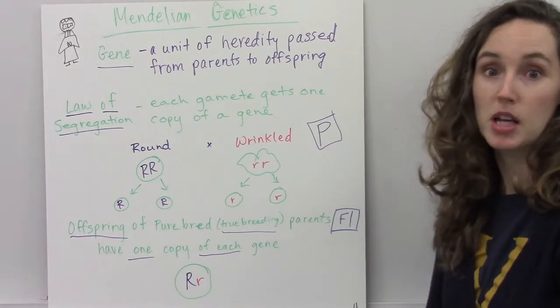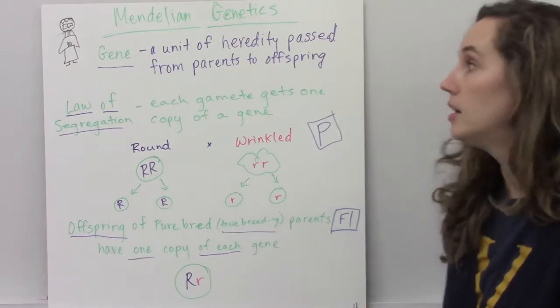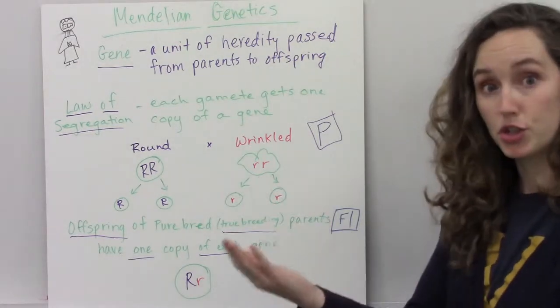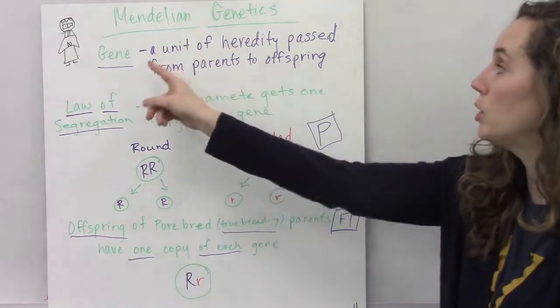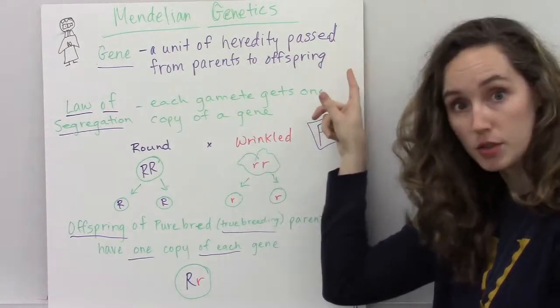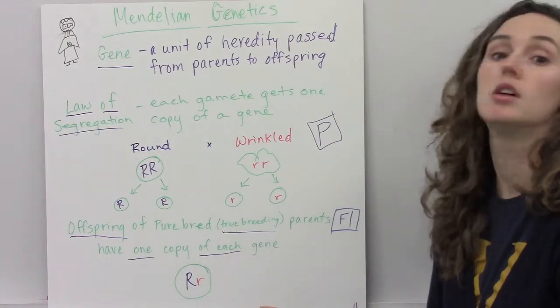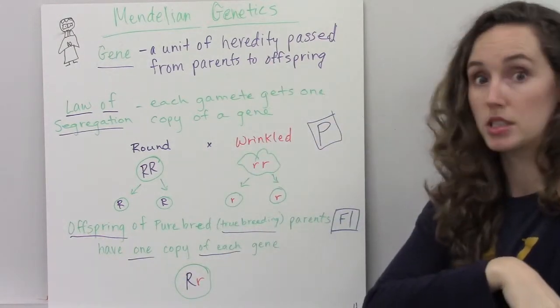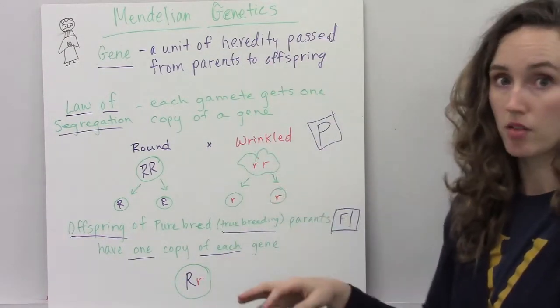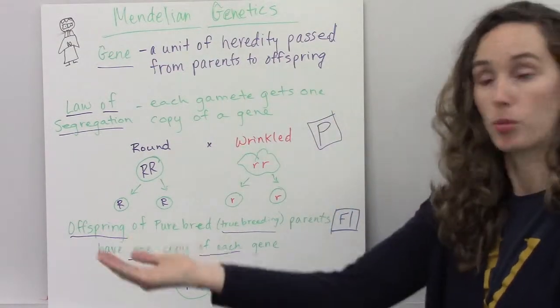Some of the major concepts that Gregor Mendel has left us with that still apply today are the idea of the gene itself, which is a unit of heredity that's passed from parents to offspring. He didn't know about DNA. This was a hundred years before the structure of DNA was discovered, but he did understand heredity and how genes were passed.